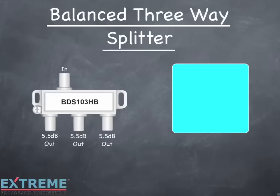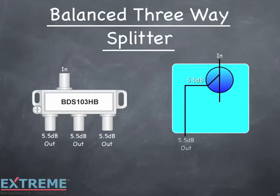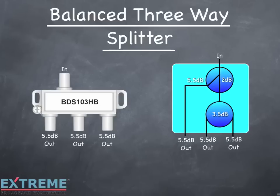Now let's look at a balanced three-way splitter and how it's constructed. On the left is a balanced three-way splitter where each port has 5.5 dB of loss. On the right, let's build the symbol equivalent. We start with a 5.5 dB directional coupler. The tap leg, which loses 5.5 dB, feeds directly to one of the 5.5 dB ports. The output port of the directional coupler loses 2 dB, so in order to get an additional 3.5 dB of loss, we add one two-way splitter off this leg for a total loss of 5.5 dB on the other two legs. Now each port has 5.5 dB of loss.